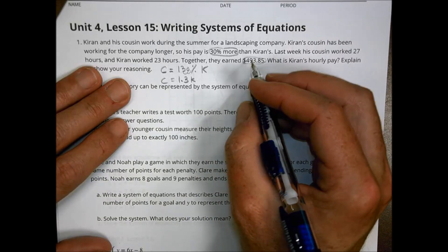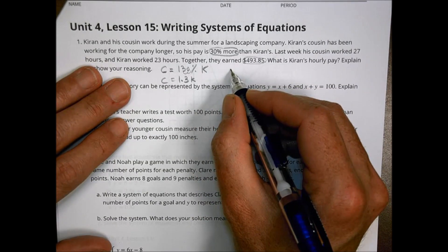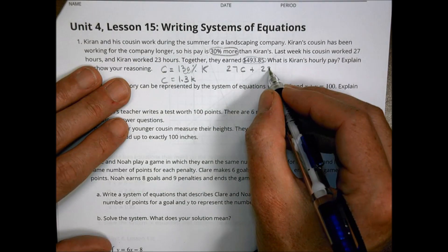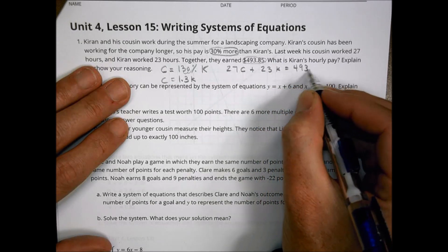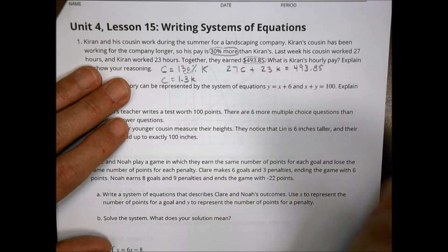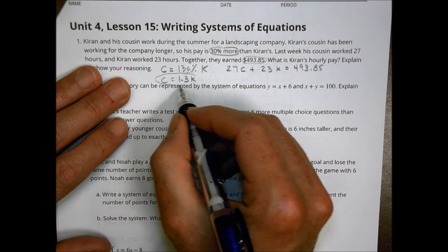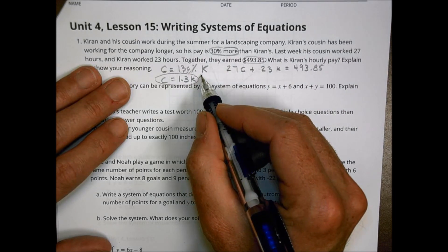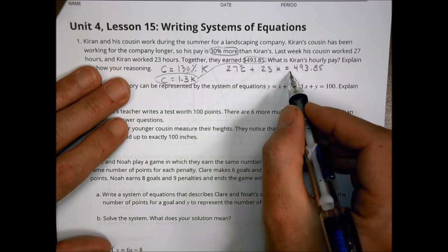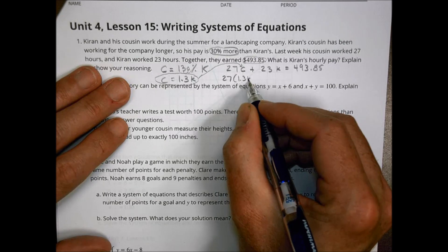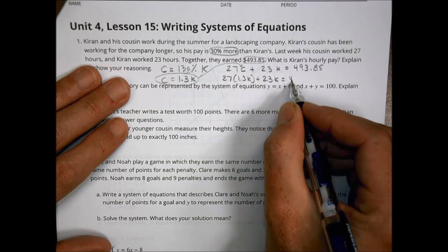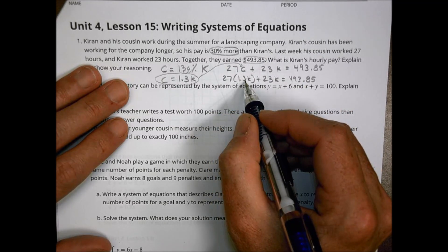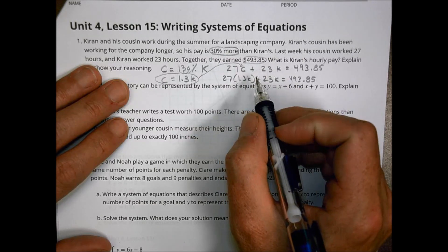Now, what we also know is that together when the cousin worked 27 hours, 27 hours times the cousin plus 23 hours times Kieran gave us a total of $493.85. So we know that C has a value of 1.3 K and we know that 27 times C plus 23 times K equals that dollar amount there. So I can substitute this value of C for that one right there. So I have an equation with all K's. 27 times 1.3 K plus 23 K equals 493.85.